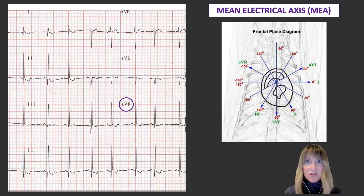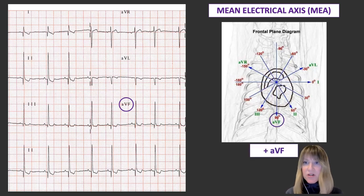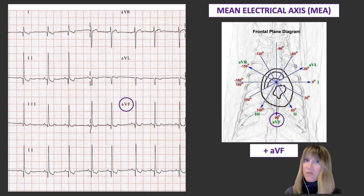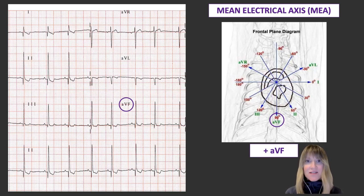So the answer is the positive pole of AVF — that's where the MEA in this particular patient is pointing, down here where I've circled the positive pole of AVF. Remember what we said about the dog: that lies within the normal range of 40 to 100 degrees. So in this case, this dog has a normal mean electrical axis.